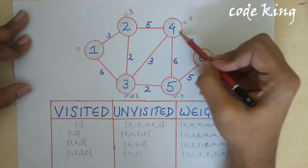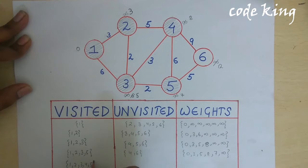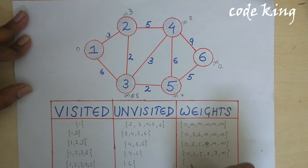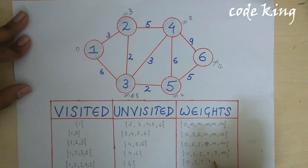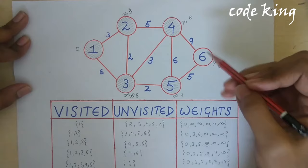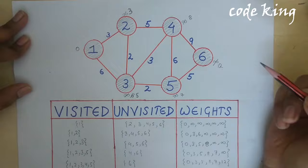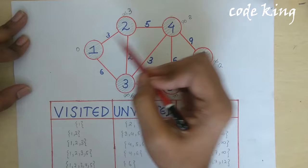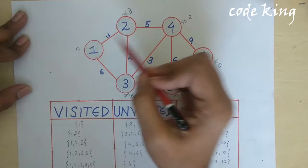We mark node 4 visited. The visited nodes are now 1, 2, 3, 4, 5, and only node 6 remains. The weights associated with all nodes are: 0, 3, 5, 8, 7, and 12. We mark node 6 visited and do not change its weight. As we can clearly see, from node 1 we have calculated the minimum path possible to all the other nodes. Thank you.